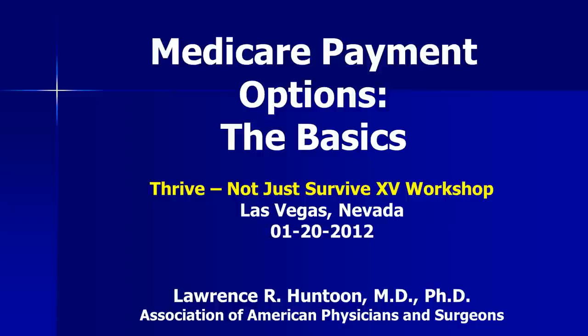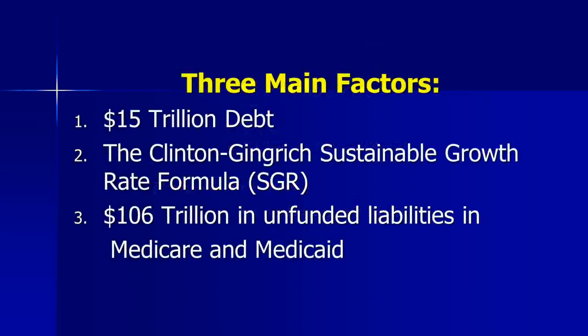The first thing we need to address is the economic practice environment — basically understanding where we are today. There are three main factors to consider: number one, the $15 trillion deficit; number two, the Clinton-Gingrich Sustainable Growth Rate formula; and number three, the $106 trillion in unfunded liabilities in Medicare and Medicaid.